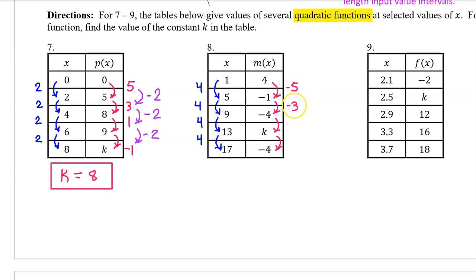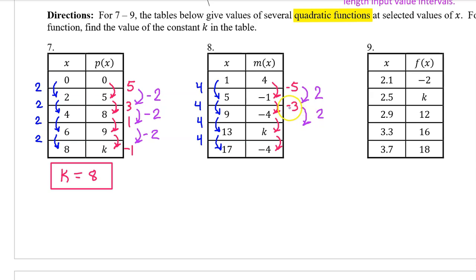For number 8, here are the output value changes and the input value changes. Because m of x is a quadratic function, the average rate of change should change at a constant rate. From negative 5 to negative 3, the output values increase by 2, and this pattern should continue. So an increase of 2 takes us from negative 3 to negative 1. An output value change of negative 1 takes us from negative 4 to negative 5, so k equals negative 5.